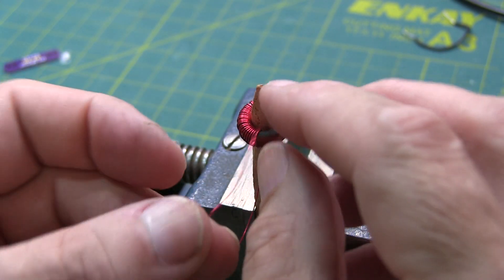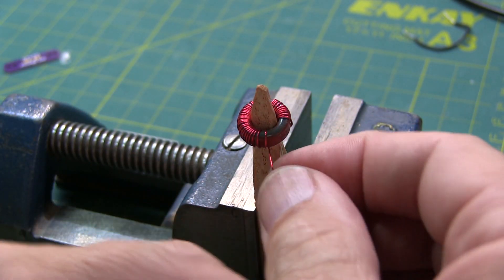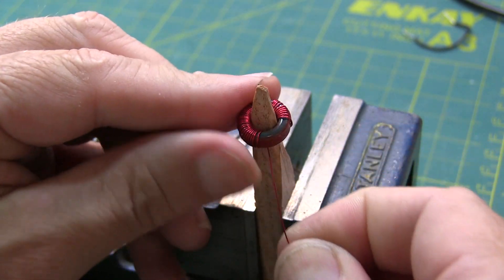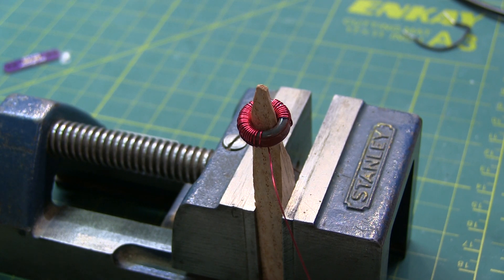So that's our starting number of turns. As we're tuning the trap, we may wind up removing some of these turns, but there's our 42 turns for the 20 meter trap. We'll do the same thing for the 30 meter trap, which requires just a couple fewer turns.